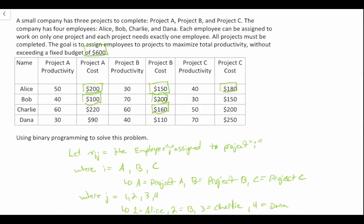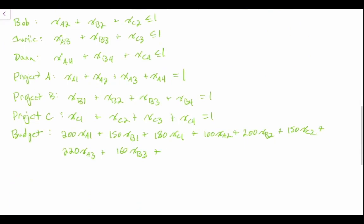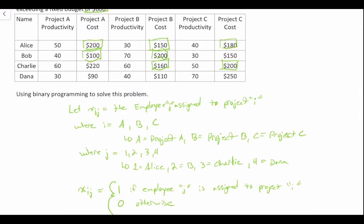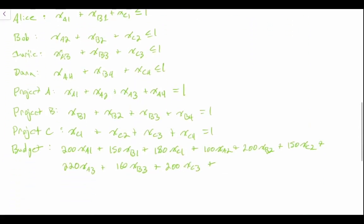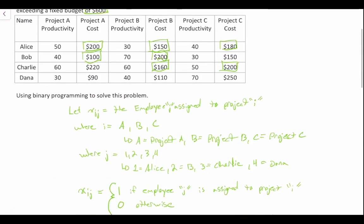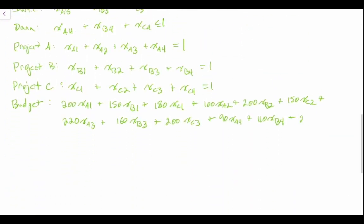Plus Charlie, so $220 XA3 plus $160 XB3 plus $200 XC3. And then finally we've got to deal with Dana, so $90 for project A, $110 for project B, and $250 for project C, so $90 XA4 plus $110 XB4 plus $250 XC4, and then this all must be less than or equal to $600. That's our budget constraint.